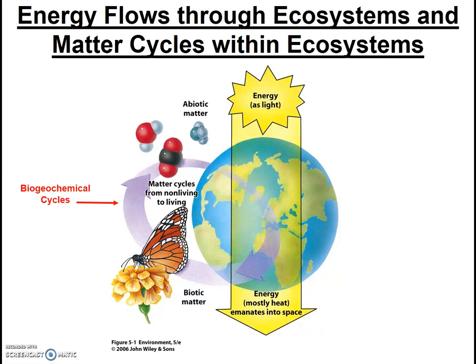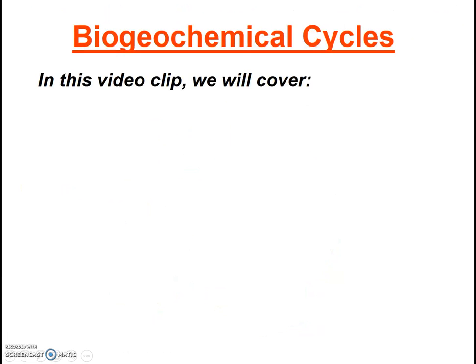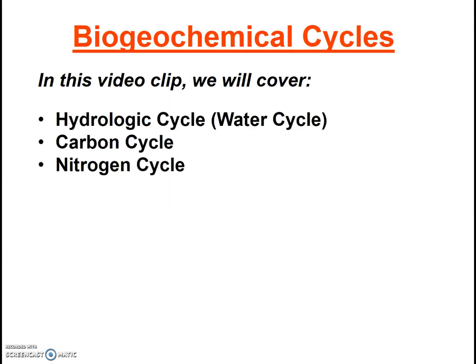Regardless of their name, these cycles show us how matter cycles within the Earth's system, which includes the biosphere, the lithosphere, solid Earth, the hydrosphere, and the atmosphere. In this video, we are going to look in detail at three cycles: the hydrologic cycle, the carbon cycle, and the nitrogen cycle, though we will also briefly discuss the phosphorus cycle.